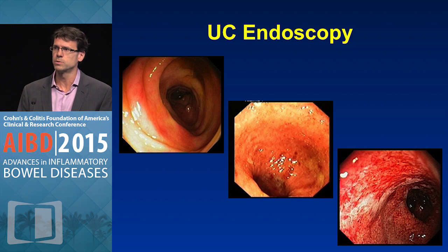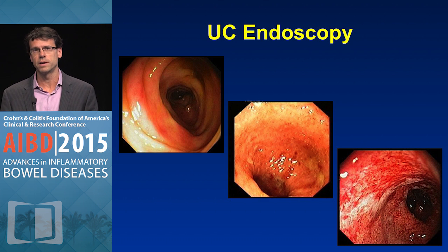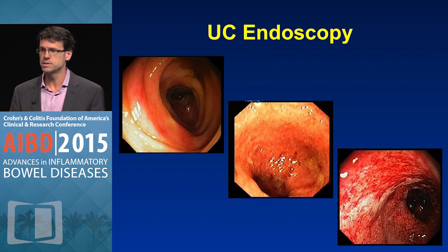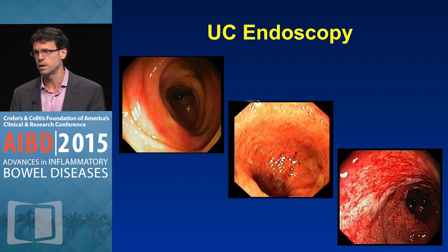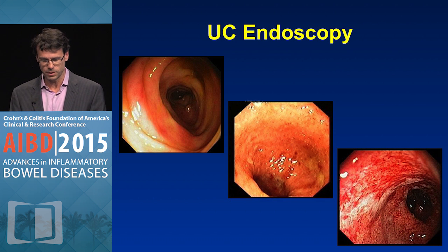Endoscopically, endoscopy does a really nice job of defining disease extent and severity and predicting complications in IBD. On the top left you have mild disease with some erythema, edema, and some hypovascularity. With moderate disease you have some friability and erosions, and with severe disease some superficial ulceration, some exudate, and some spontaneous bleeding.